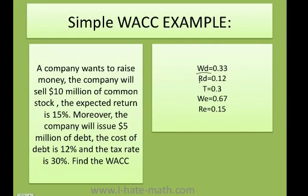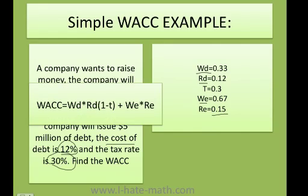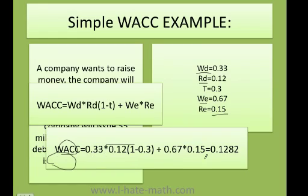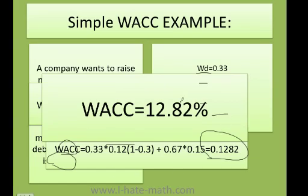Now I have the weight of debt. The cost of debt RD is 12%, or 0.12. The tax rate T is 0.30. The weight of equity is 0.67 and the return on equity is 0.15. Plugging into the formula: WD = 0.33, RD = 0.12, after-tax term = (1 − 0.30), plus 0.67 times 0.15. Once we do all the calculations, we get 0.1282, or 12.82%.